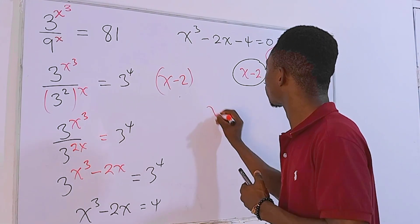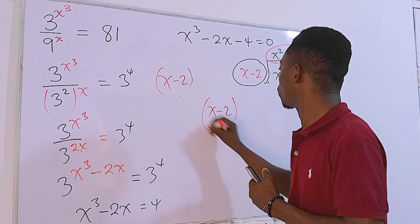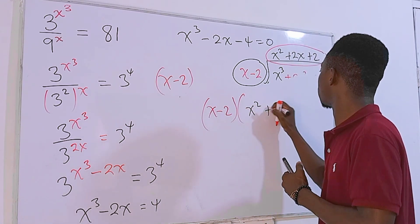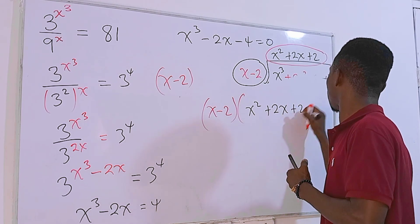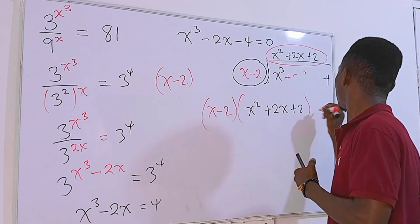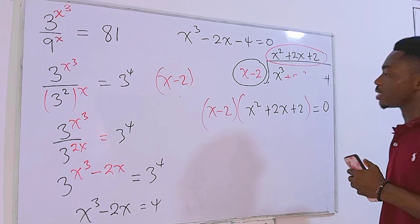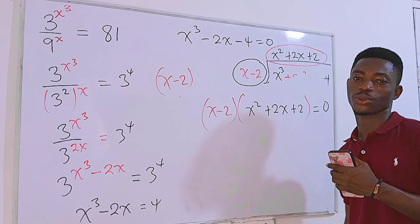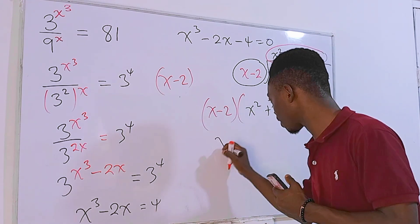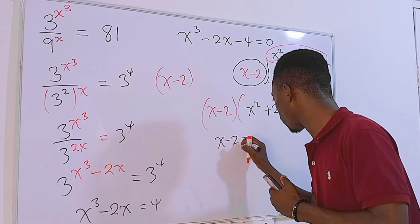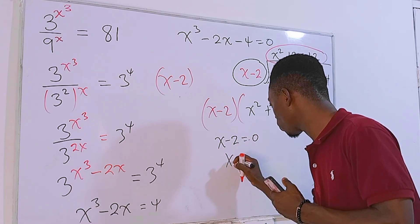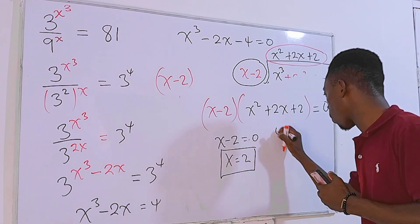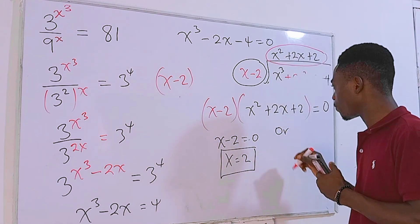We now have two factors: (x minus 2) times (x squared plus 2x plus 2) equals zero. Since the product of two factors equals zero, either (x minus 2) equals zero, giving x equals 2 as a solution, or the second factor x squared plus 2x plus 2 equals zero.